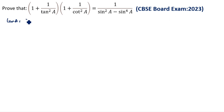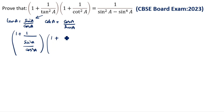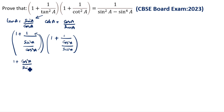So we have sin A by cos A. Cot A is equal to cos A by sin A. We will split tan A as sin A by cos A. So: 1 plus 1 by (sin square A by cos square A), close the bracket. Then 1 plus 1 by (cos square A by sin square A). So this cos square A goes up.